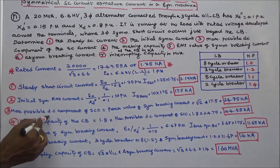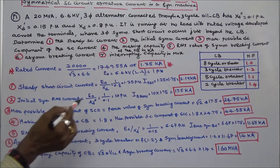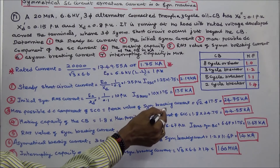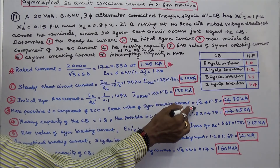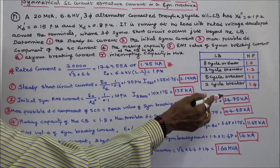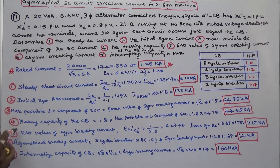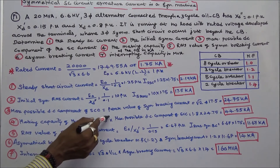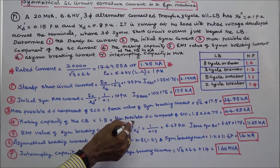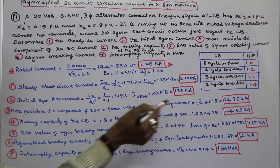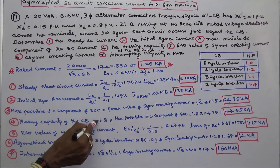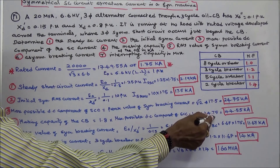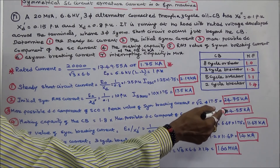Third is the maximum possible DC component of the short circuit current. That equals the peak value of the symmetrical current: root 2 into 17.5, which equals 24.75 kA. Fourth is the making capacity of the circuit breaker in kA: 1.8 into the maximum possible DC component. The value 1.8 is the doubling effect value. 1.8 into 24.75 equals 44.55 kA.